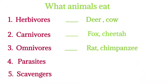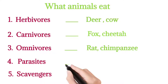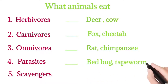Fourth, parasites. Animals that live on or inside the body of other animals and derive their food from them are called parasites. Examples: bedbug, tapeworm, hookworm, etc.